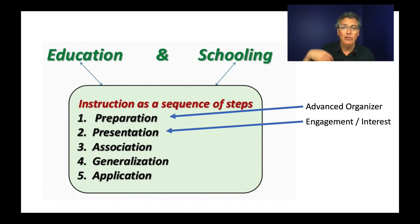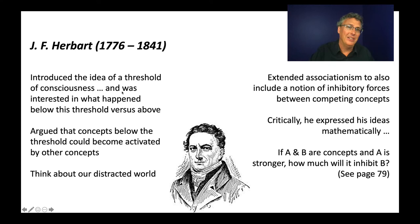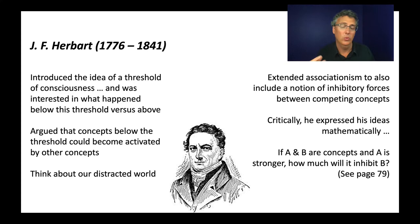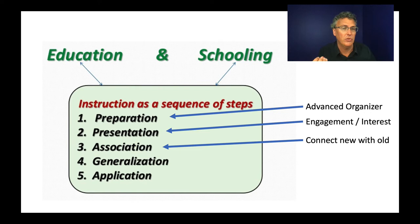Once you've prepared their mind and given them new information in an engaging way, the next step is association — that assimilation part. You take the new information and connect it to what already exists. When I talked about Herbart, I connected him to Newton, to the associationist idea, to Kant — when you learn about a new person and connect them with things you already know, you make that new information durable. You give it a home, a place within the existing knowledge structure, by showing how it's connected to things you already learned and how it's different from others.